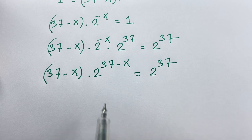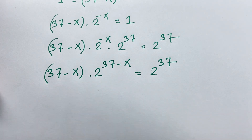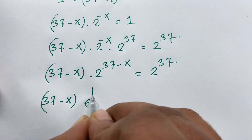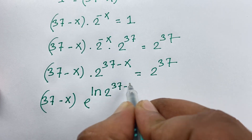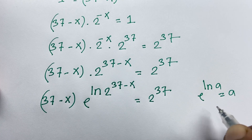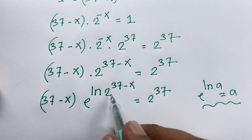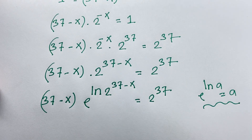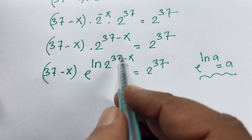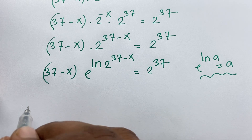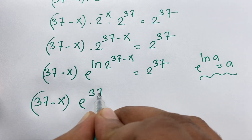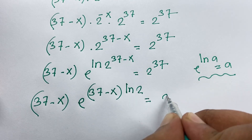Now I will use the Lambert W function. I rewrite using the identity e to the power ln a equals a. So 2 to the power 37 minus x becomes e to the power ln(2) times (37 minus x). Then 37 minus x times e to the power (37 minus x) times ln 2 is equal to 2 to the power 37.